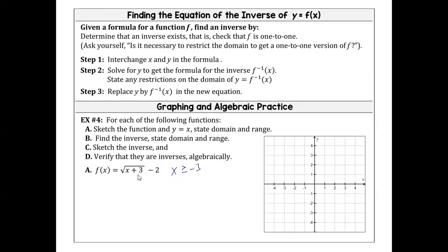When I graph this, I know it starts at negative three, negative two. If x equals one, that gives me four under the radical, and the square root of four is 2, so that puts me at y equals zero — the point is (1, 0). So my graph is a square root curve starting at (−3, −2). These are the notes we started last week.